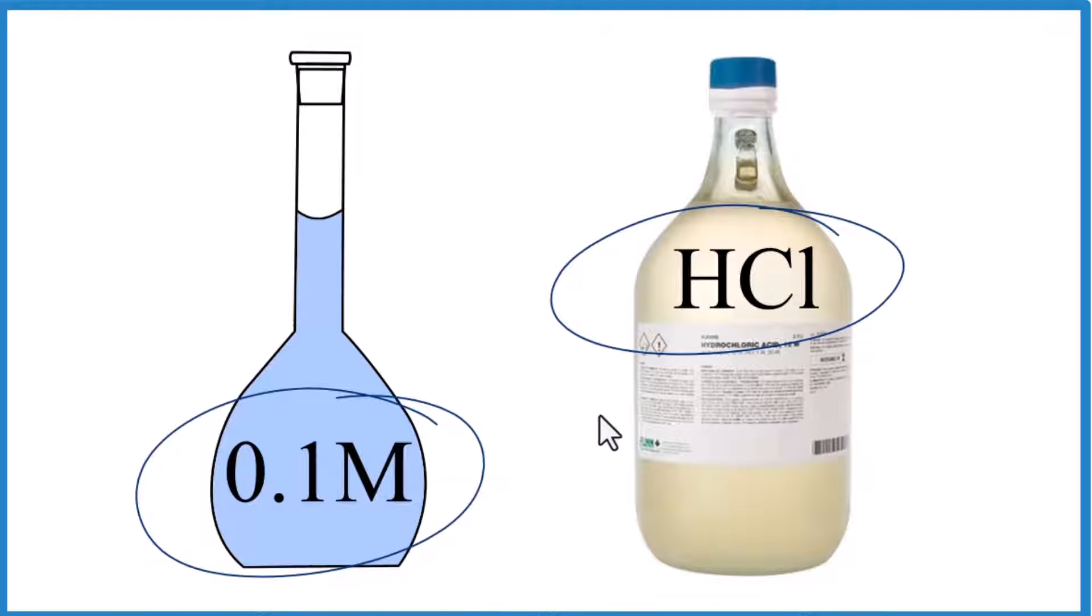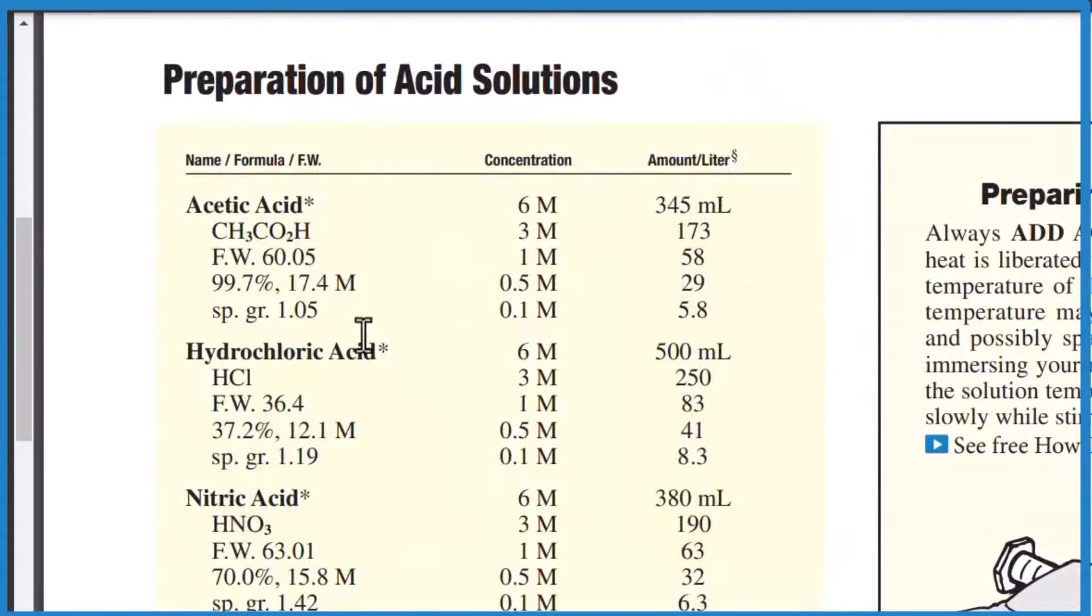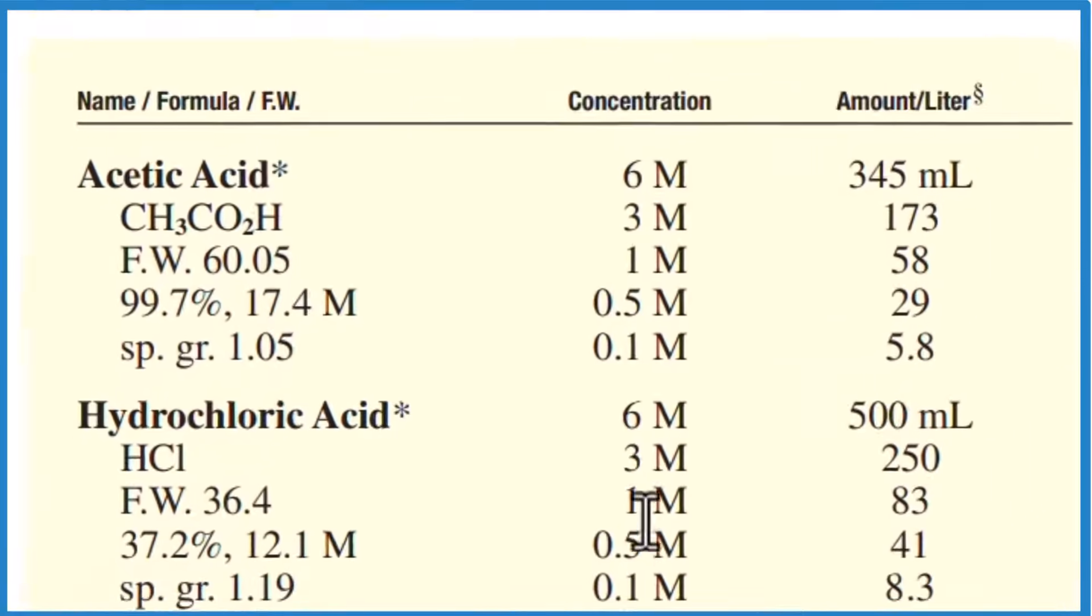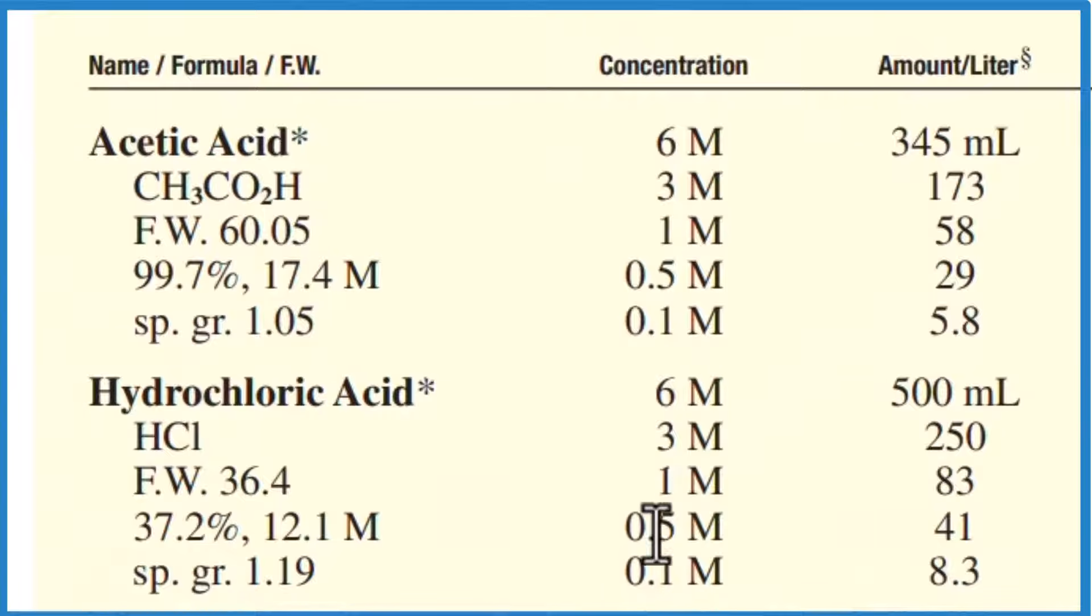So let's take a look at one of those recipes from Flynn Scientific. This one's online, link in the description. So here's our hydrochloric acid right here, and we have some different molarities we could make up. So if you want to make 0.1 molar, you're going to need 8.3 milliliters.